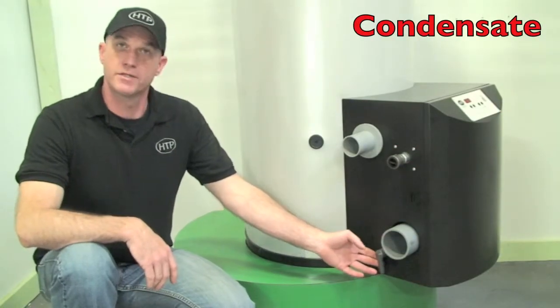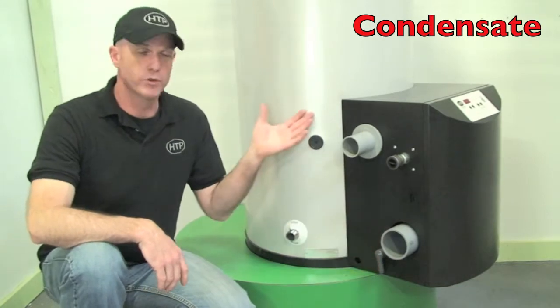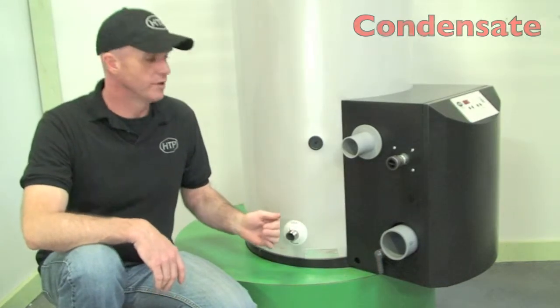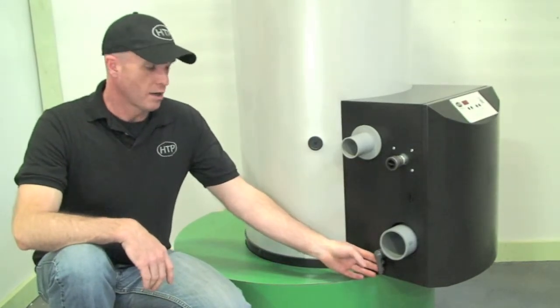This fitting down here is to remove the condensate. On a condensing water heater, the unit produces condensate so we need to remove it. This is our drain.